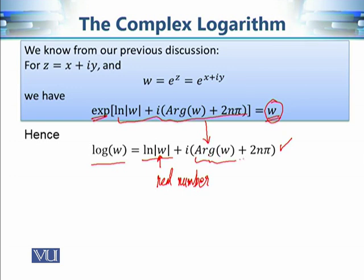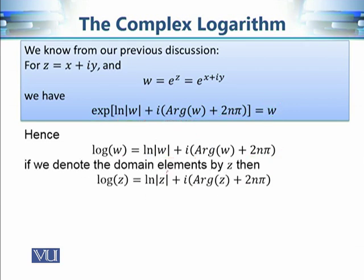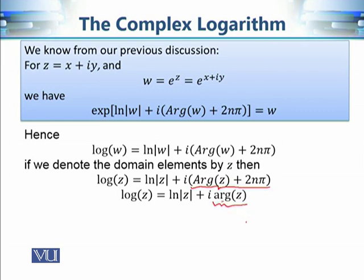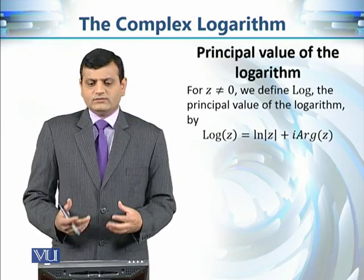The argument or principal argument of w is included, and we add 2nπ to capture all images of w under the log map. If we denote the domain variable as z instead of w, the definition of the complex logarithm is: log(z) = ln|z| + i(Arg(z) + 2nπ), where Arg(z) is the principal argument of z. This can also be written using the general argument of z depending on the situation.